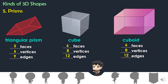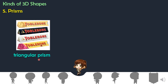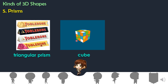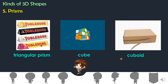Here are the examples of prisms. First, we have triangular prism — this is a box of a famous chocolate brand, Toblerone. Next, cube — this is the well-known toy, the Rubik's Cube. Next, cuboid — and here is just a box.